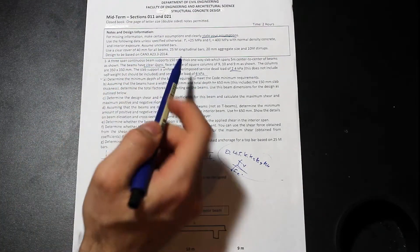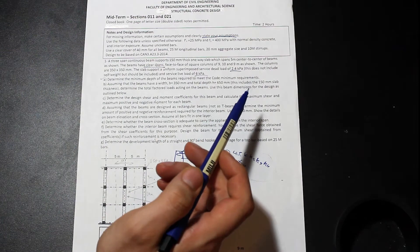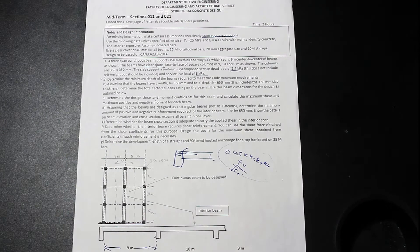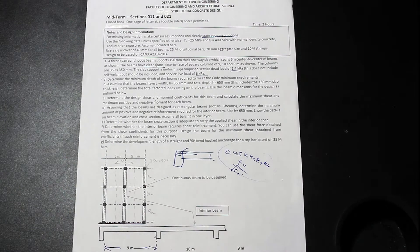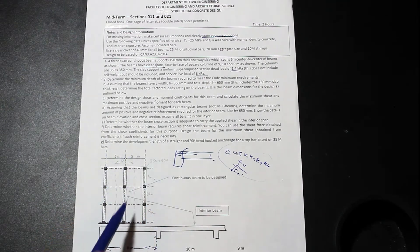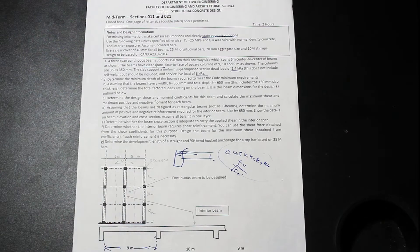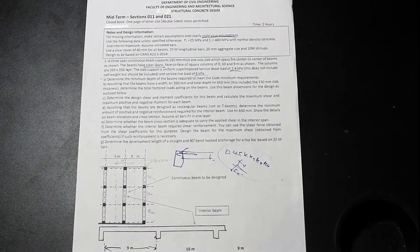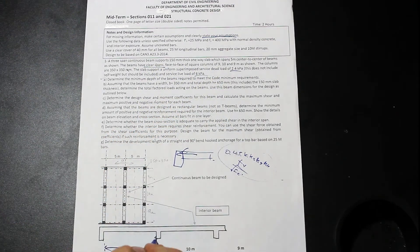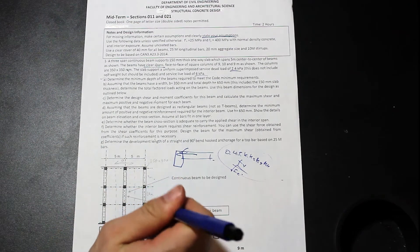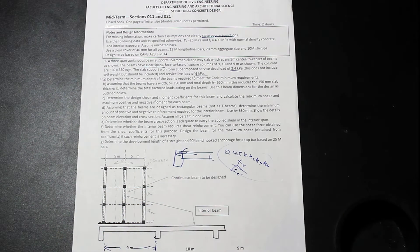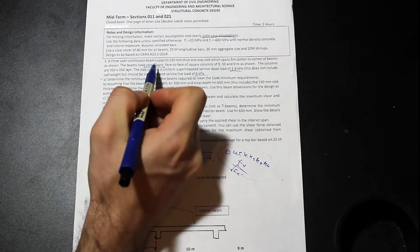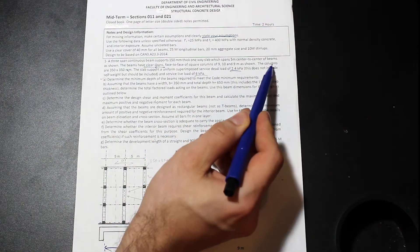So let's take a look at the first question. There's only actually one question. So let's take a look at that one. A three-span continuous beam supports a 150-millimeter thick one-way slab, which spans five meters center to center. So as we can see, this is the five meters center to center in this drawing down here. So it's always important to look at the drawing. And the beams have clear spans. This is the first trick. Face-to-face of square columns. So the clear spans down here, okay, are the 9-meter and the 10-meter, and those are face-to-face of the columns, of the beams. And a lot of people thought that that was center to center. They didn't read this word clear span.